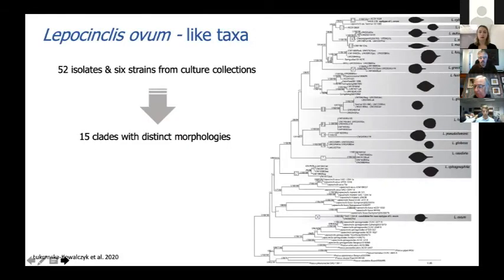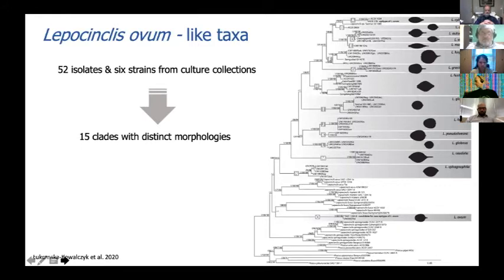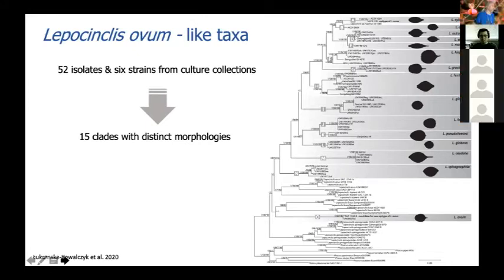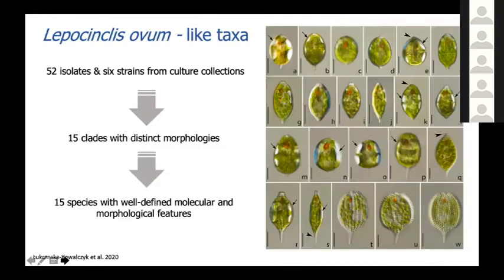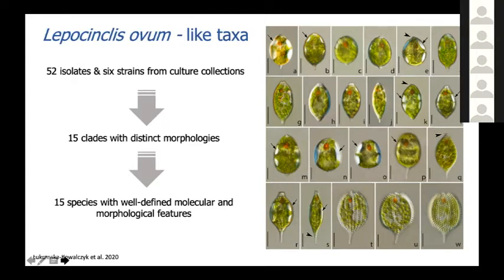This kind of approach is already being used. Here is a very recent example with a group of taxa similar to Lepocinclis ovum, a very common freshwater taxon. The authors used six strains from culture collections and also 52 isolates from the environment. Thanks to that, they obtained DNA and built a phylogenetic tree with 15 clades, each with distinct morphology. This phylogeny combined with distinct morphologies from live cells allowed them to define 15 species, well-defined based on both molecular and morphological features.